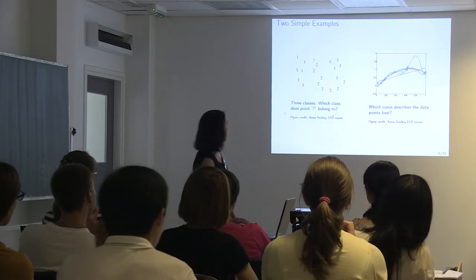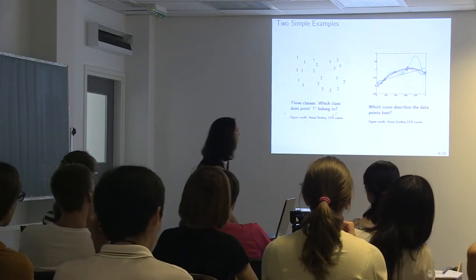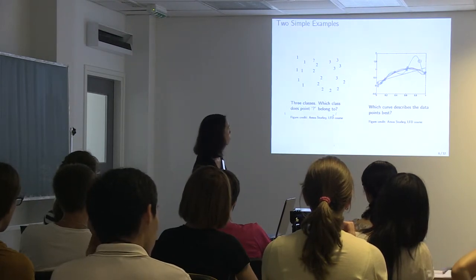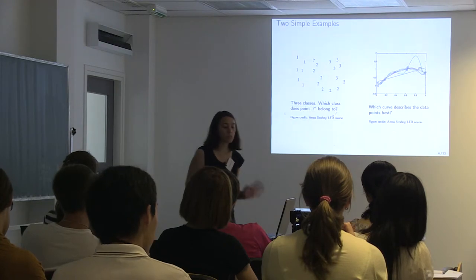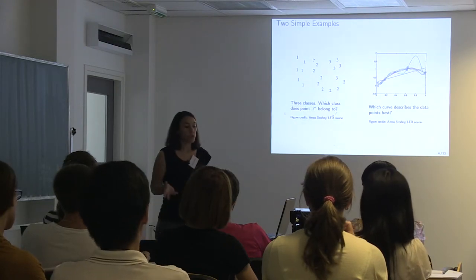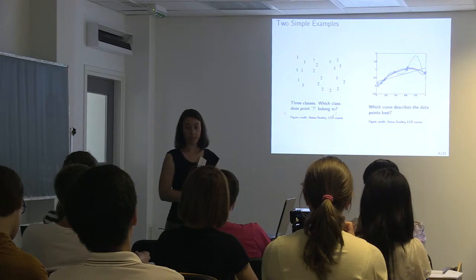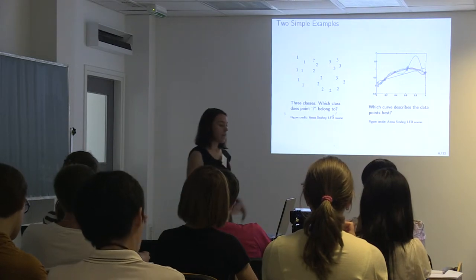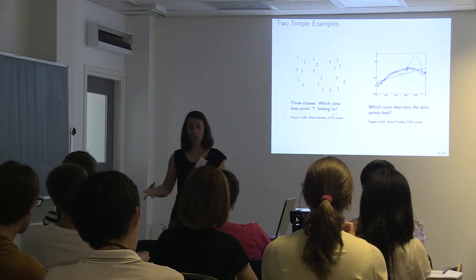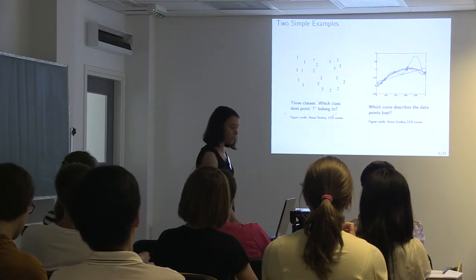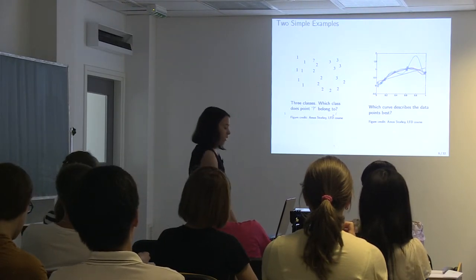Here the circles are data points and we have different polynomials as well as a linear model. We want to know which of these models represents our data best, and whether we can use it afterwards to predict new data points — that's the ultimate goal.